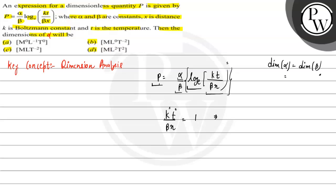kt has dimensions of energy. We can write it as 3/2 kt or 1/2 kt corresponding to degrees of freedom. The product kt has the dimension of energy. The whole term will have the dimension of energy divided by beta into x, equal to 1.